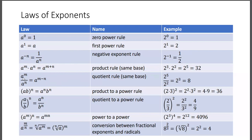Quotient rule with the same base, you subtract the exponents. Two to the fifth divided by two squared is two to the five minus two, or two to the third, which equals eight.